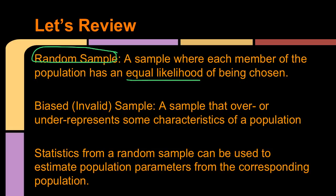And then we have a biased or an invalid sample. These are not good to be able to use for predictions. It means that a sample has either over or under represented some characteristics of the population. So the biased or invalid samples would be things like your convenience sample or your voluntary sample or a sample that is not representative of the entire population.